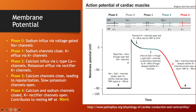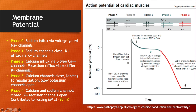Phase zero is the upshoot, when sodium is going to enter the cell rapidly. There are voltage-gated sodium channels along the sarcolemma, and when the action potential reaches them, it activates the opening of the sodium channels. Sodium comes in and results in depolarization of the cell. Once the sodium comes into the cell and we reach a certain point of depolarization, at phase one, sodium channels are going to close and potassium channels are going to open and let out potassium.